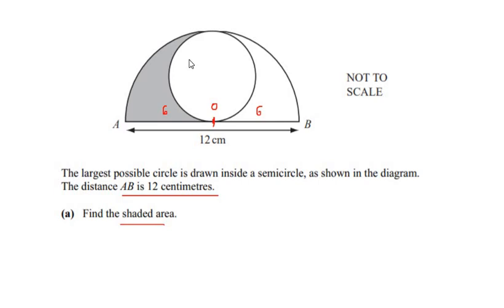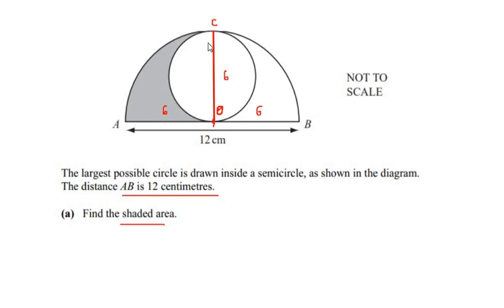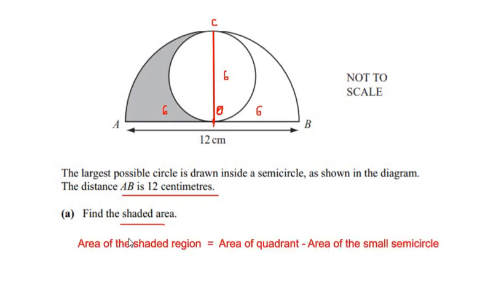To find the area of the shaded region, I am going to divide this semicircle into two equal halves. This is the line OC which divides the semicircle into two equal quadrants, and OC is also the radius of the given semicircle, so the length of OC is also 6 centimeters. Now to find the area of the shaded region, we have to subtract the area of the small semicircle from the given quadrant.